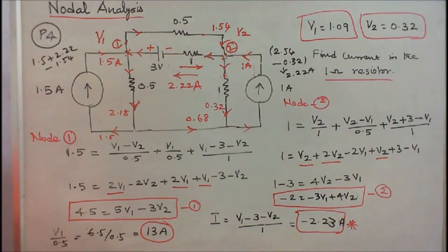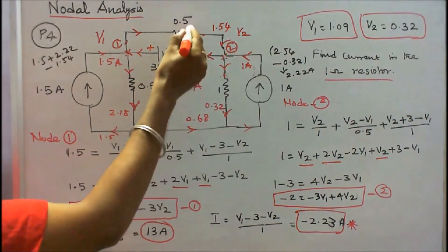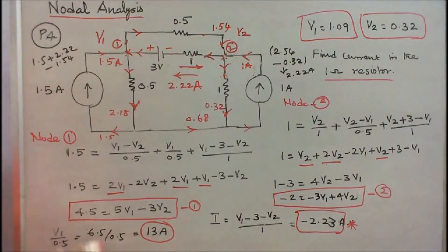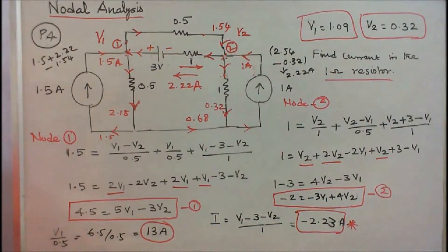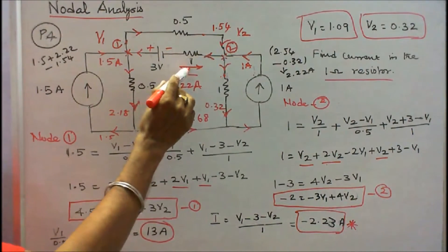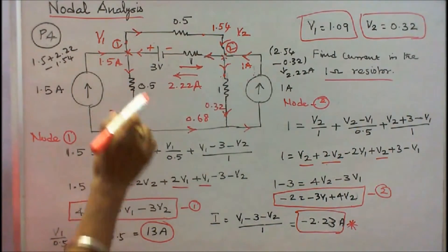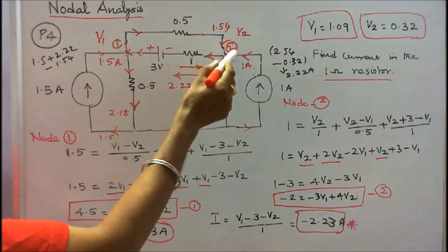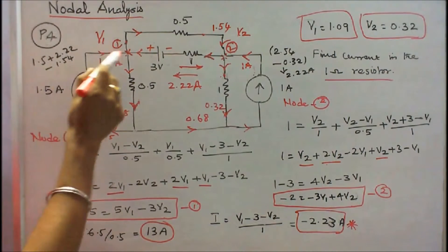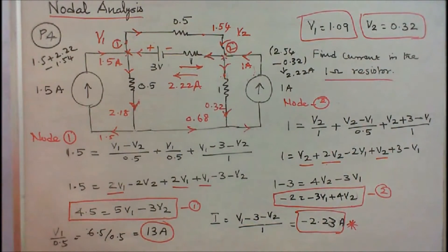Problem number 4. Four resistors — 0.5 ohms, 1 ohm, 1 ohm, 0.5 ohms — along with two current sources of 1.5 A and 1 A, and one voltage source of 3 V, are connected as shown. Find the current in the 1 ohm resistor. The circuit has two nodes: node 1 with voltage V1, and node 2 with voltage V2. Current towards node 1 is 1.5 A; current towards node 2 is 1 A.